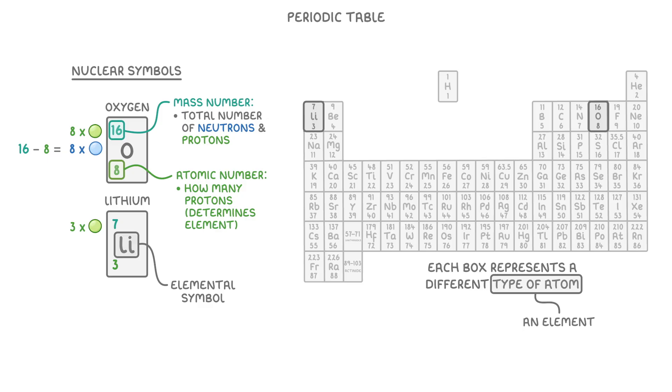The number of neutrons an atom has isn't always the same as the number of protons though. For example, lithium has a mass number of 7. So to find the number of neutrons lithium has, we would do 7 minus 3, which equals 4. So lithium has 4 neutrons even though it only has 3 protons.